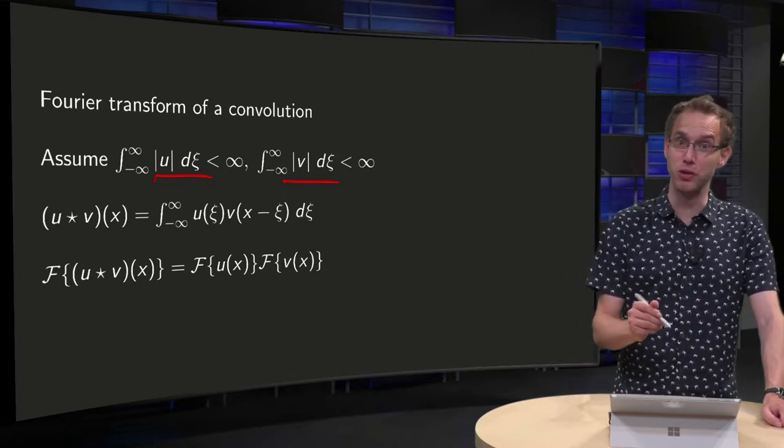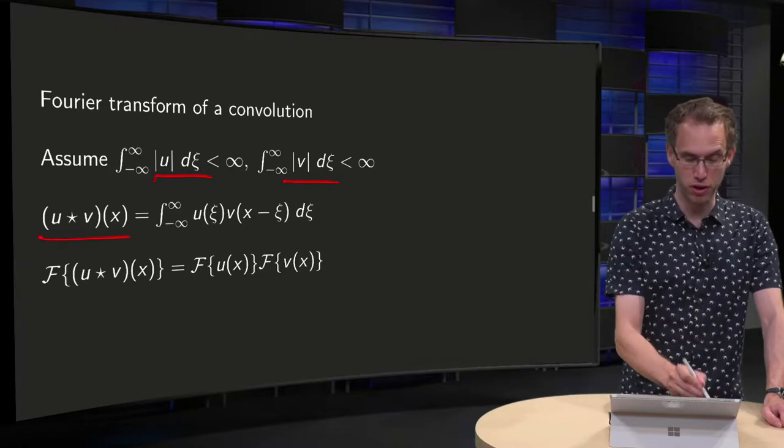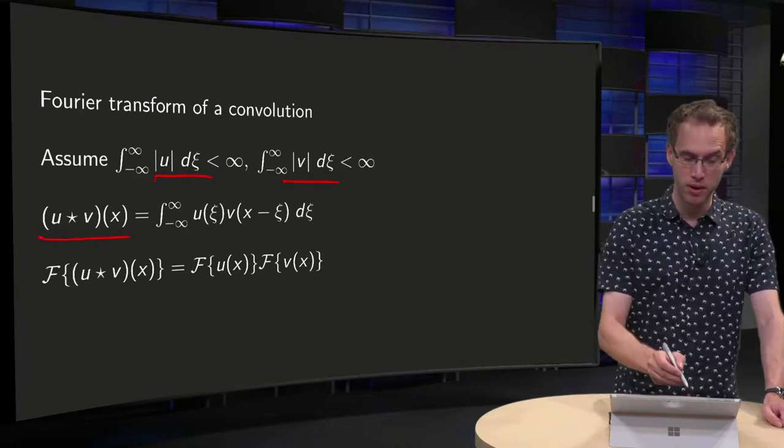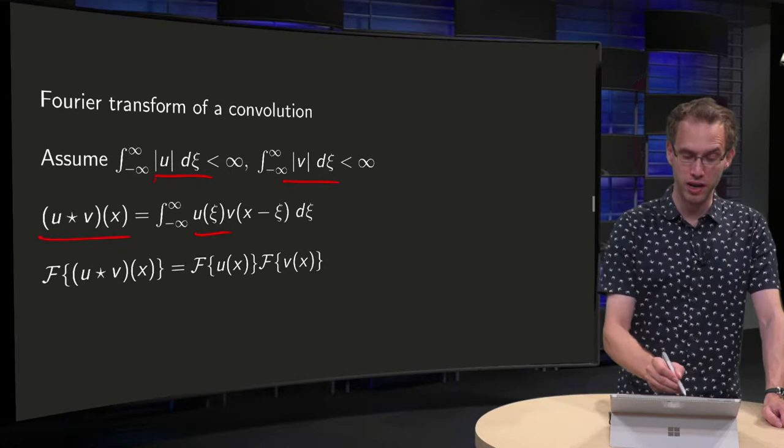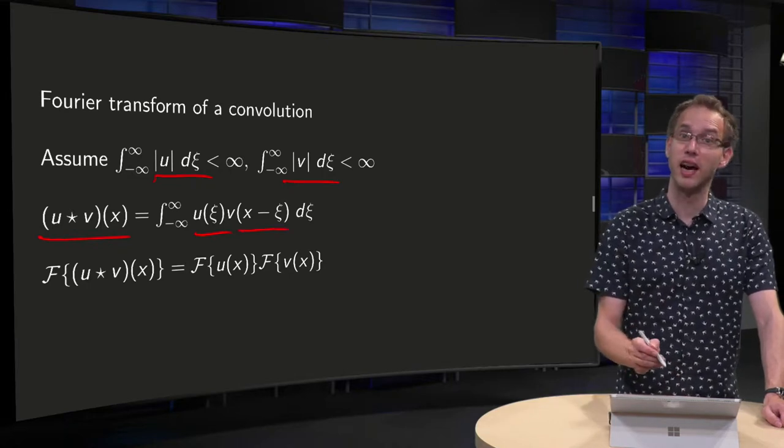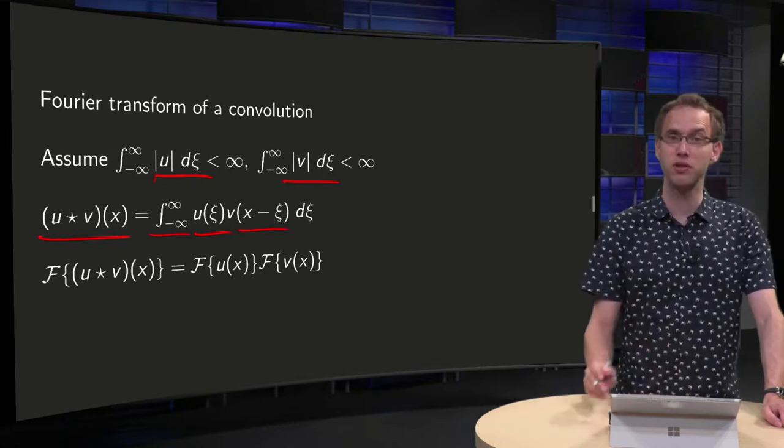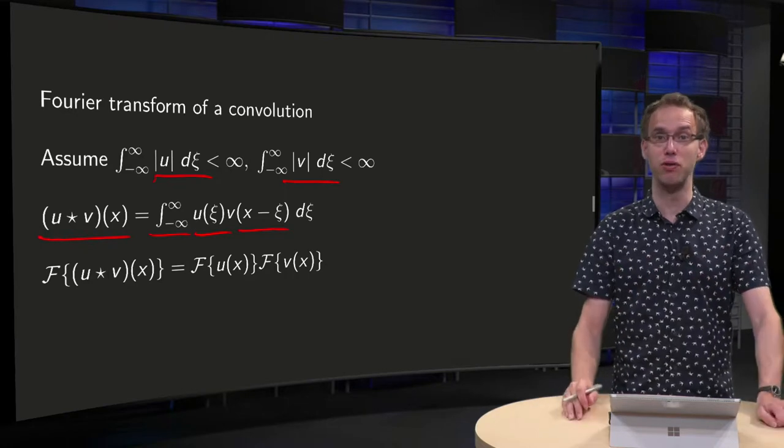Then we know what the convolution is of u and v, u star v. So what do we need to do? We have u of psi, v of x minus psi, I integrate from minus infinity to infinity, that is the convolution of u and v.